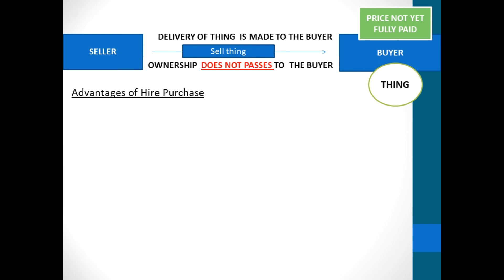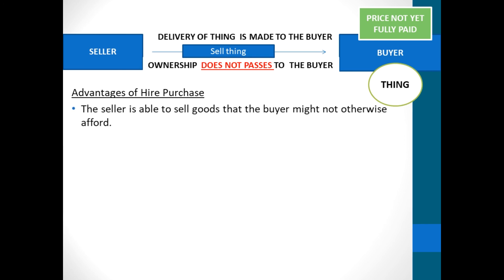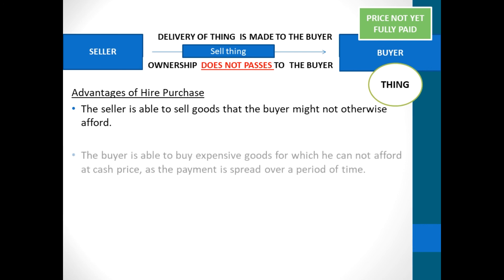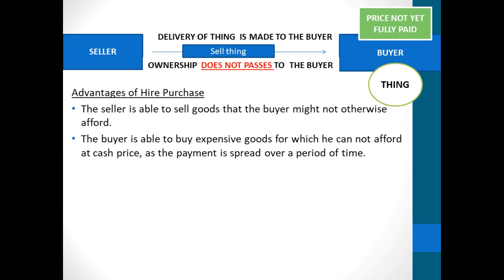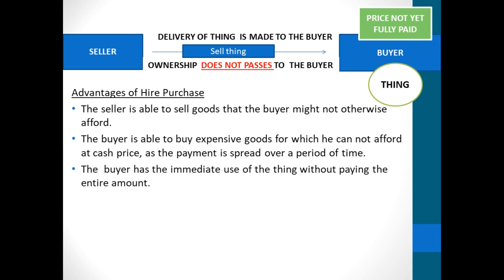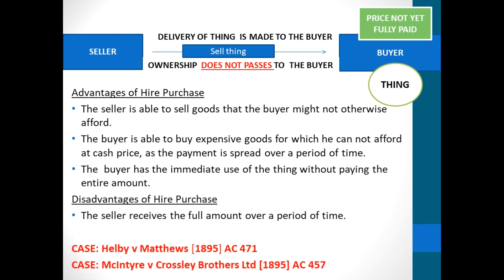So, the seller sells the thing to the buyer using hire purchase, delivers the thing to the buyer, but ownership does not pass to the buyer — ownership remains with the seller until the last payment is made. But the buyer possesses the thing and uses it whilst paying for it. Advantages of hire purchase: the seller is able to sell goods that the buyer might not otherwise afford; the buyer is able to buy expensive goods for which he cannot afford the cash price, as the payment is spread over a period of time; and the buyer has the immediate use of the thing without paying the entire amount. The disadvantage is that the seller receives the full amount only over a period of time.